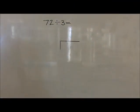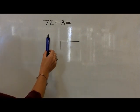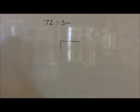In year 4, children use division by chunking to help calculate questions such as 72 divided by 3.